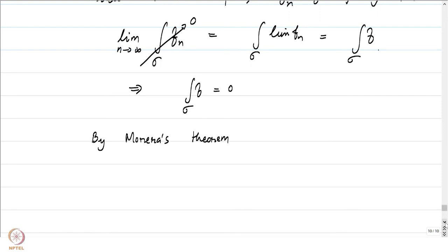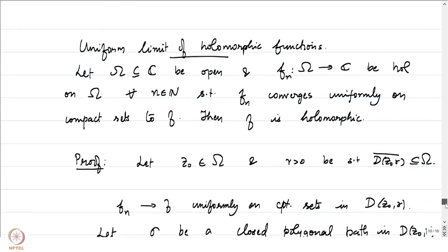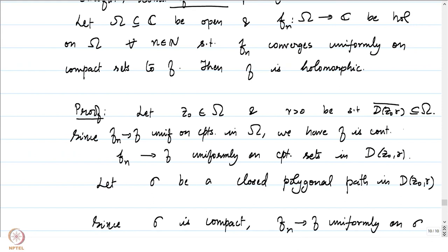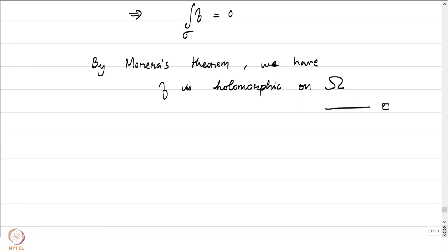Before applying Morera's theorem, note that since fₙ converges to f uniformly on compact sets in ω, f is continuous — this follows from real analysis. So we have the continuity hypothesis for free. We can now apply Morera's theorem to conclude that f is holomorphic on ω, which is what we were attempting to prove.